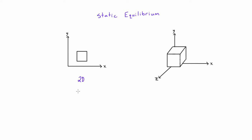We also need the sum of moments about some point to be zero. That's because if we had some net force in the x direction, this object would want to translate in x. A net force in y would cause translation in y, and a nonzero moment means the object would tend to rotate. So if all of those are set to zero, we have static equilibrium in two dimensions.